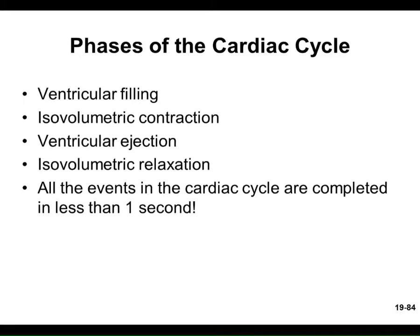Looking at an EKG, the easiest way to define a cardiac cycle is R to R — you could go P to P or T to T, but the R wave is so substantial it's easiest to go from R peak to the next R peak. That distance — time — should be 0.8 seconds on average, with a normal range of 0.6 to 1.2 seconds, representing a heart rate of 50 to 100. Below 50 is bradycardia; above 100 is tachycardia.